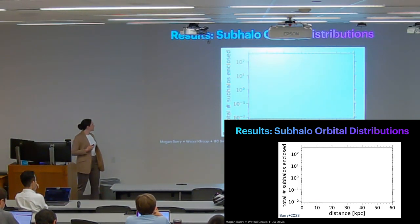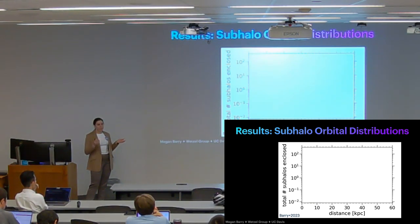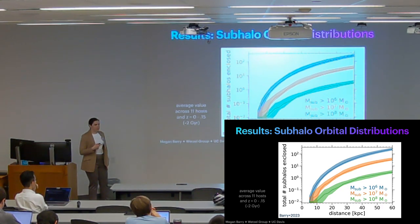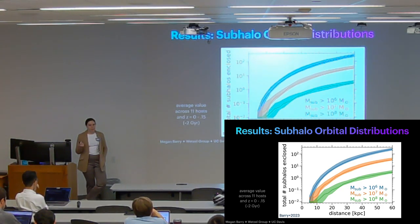All right, so on to our results. The first population metric I'll show is just the total number of subhalos enclosed within an imaginary spherical shell at some distance. So again, all the results I'll show unless stated otherwise are going to be averaged across our 11 hosts. And these are split into three mass ranges—you can call them small, medium, large if you'd like. This 10 to the 8 solar mass group is kind of pushing into luminous territory, but these two lower mass ranges are expected to basically be completely dark.